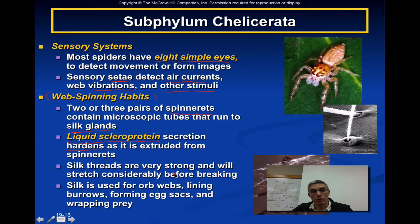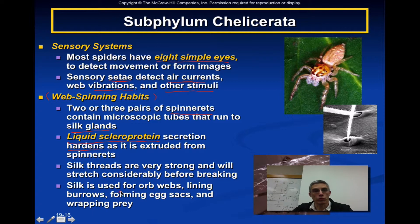These silk threads are extremely strong and can stretch extremely well. Silk is used for various purposes: building webs, lining burrows — for example, tarantulas line their burrows with silk rather than building a web — forming egg sacs to protect the young, and wrapping up prey to store it for later use.